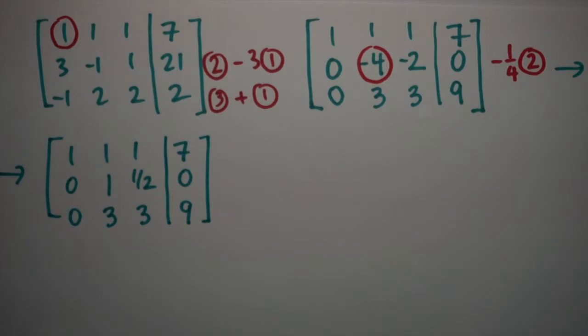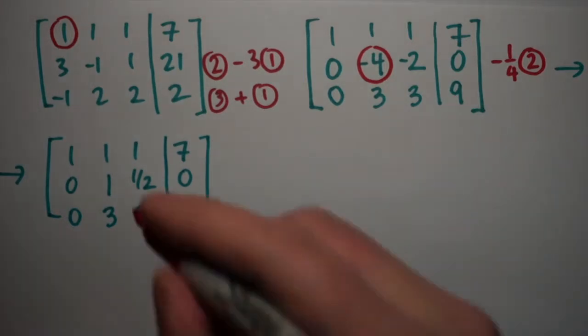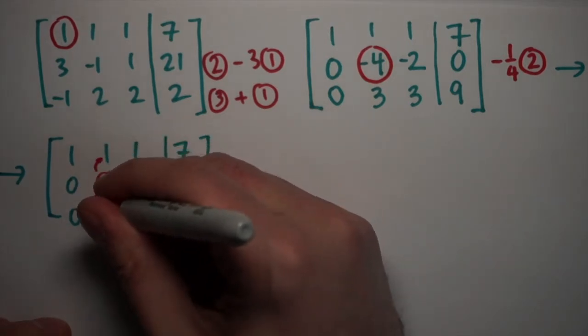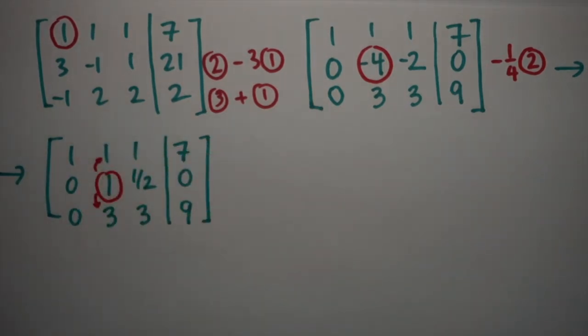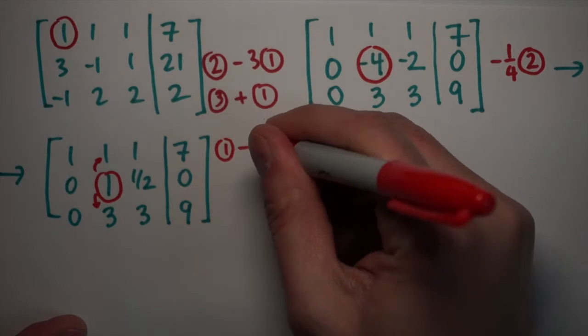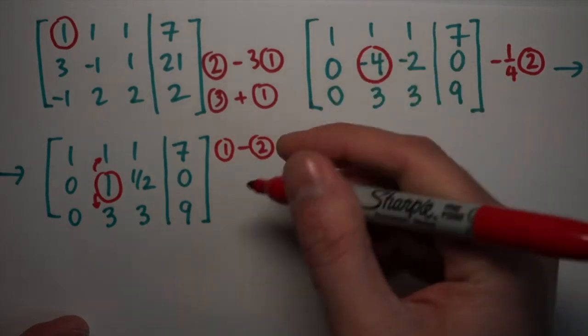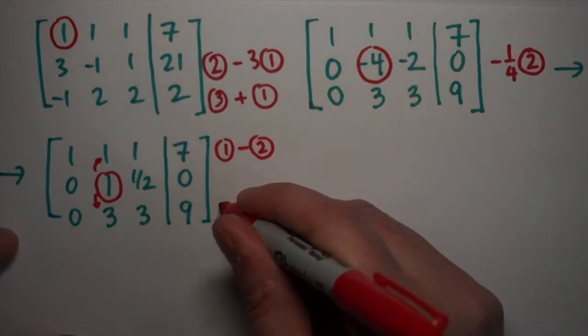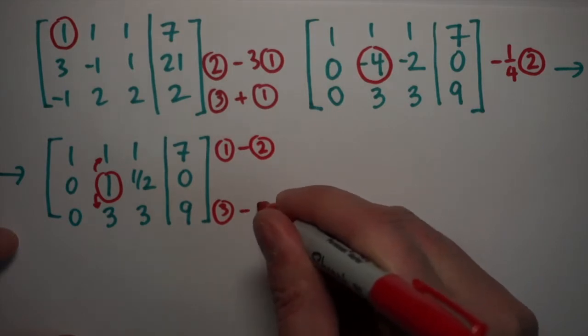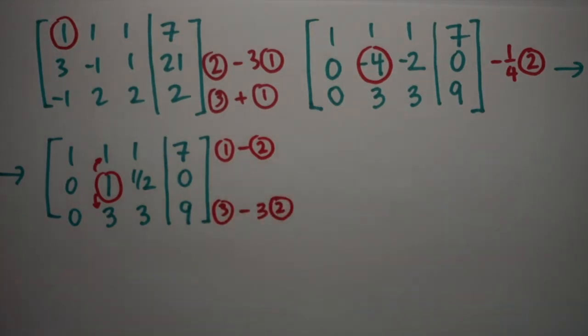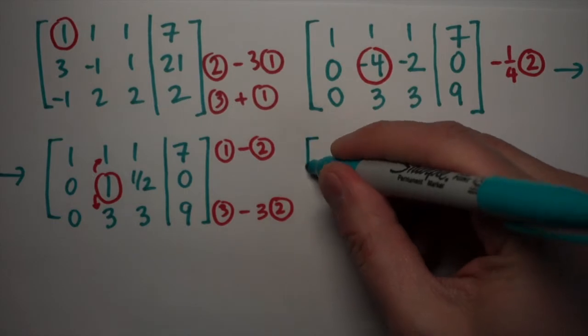Now that this number is a one, I can use it to get rid of the numbers above and below it quite easily. I can figure out what action to take fairly easily from that. So I use this one to get rid of the one and the three. And to get rid of the one above it, I'm going to use row one minus row two and replace row one by that. Use row three minus three times row two to get rid of the three as well. And hopefully at this point you're starting to see a pattern in how these numbers actually get eliminated.